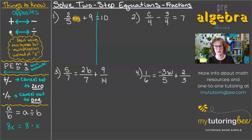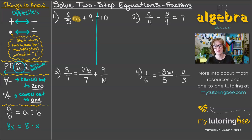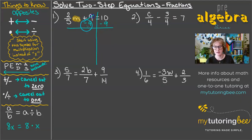I want to undo that multiplication and that addition. When we are solving equations with more than one step, we want to work in backwards order of operations. So that means we are going to undo any addition or subtraction first, and then work on any multiplication or division. So let's go ahead and undo that addition of 9 by subtracting 9 from both sides of the equation. That's going to cancel that out, and we're left with 2/5·m equals 1.